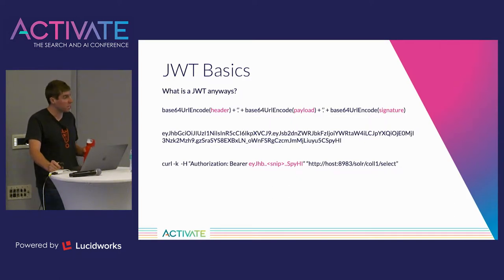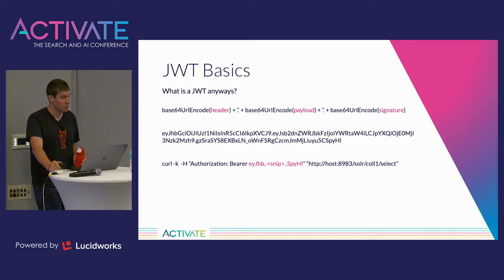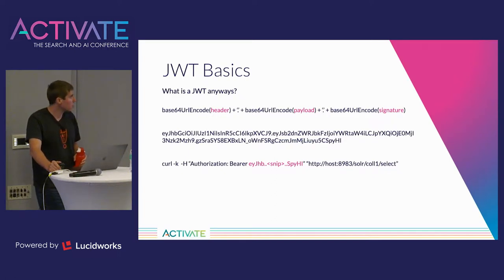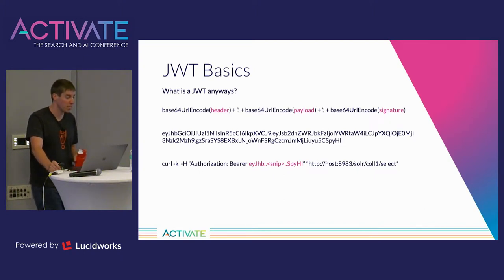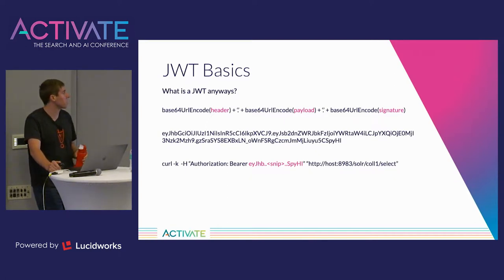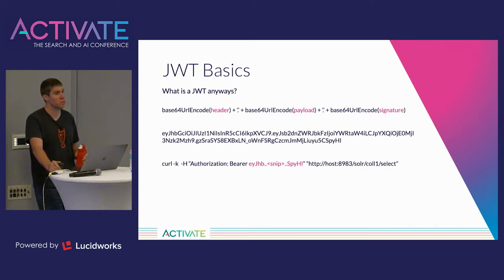When the identity provider sends out the JWT, it takes the three sections individually, base64 encodes them, and concatenates them together separated by periods — resulting in one long ASCII-like token. This encoded string is the JWT, which gets returned by the identity provider and which users send along to Solr. To submit a query to Solr with a JWT, you put it in an Authorization header starting with 'Bearer'.